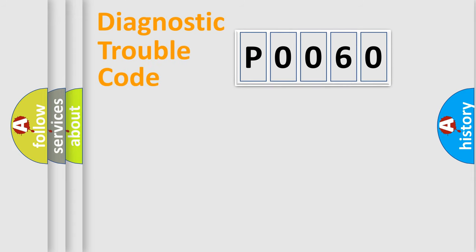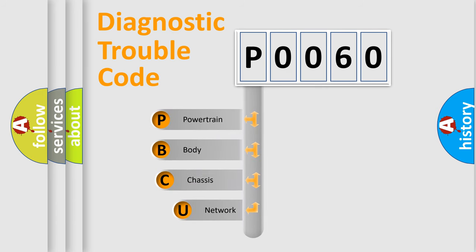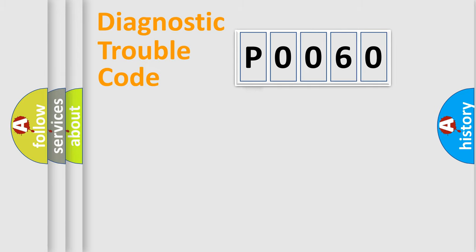Let's do this. First, let's look at the history of diagnostic fault code composition according to the OBD2 protocol, which is unified for all automakers since 2000. We divide the electric system of an automobile into four basic units: Powertrain, Body, Chassis, and Network. This distribution is defined in the first character of the code.